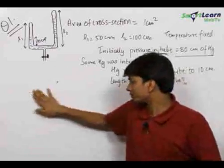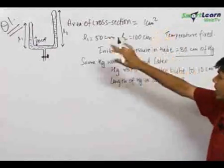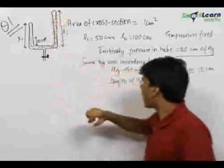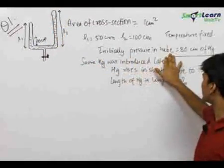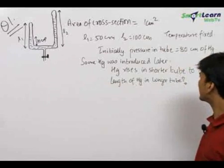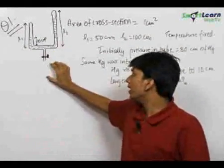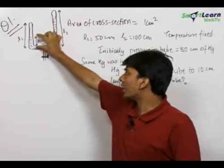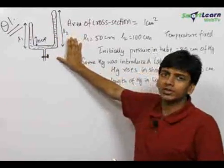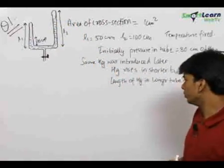Let us start with the first question. The area of cross section of the tube is given to be 1 centimeter square. The lengths of the two tubes are given, and initially the tube was empty and the pressure of the gas inside the tube was 80 centimeters of mercury. Now some mercury is introduced and it rises to a height of 10 centimeters in the smaller tube. We need to find the height to which mercury rises in the longer tube.